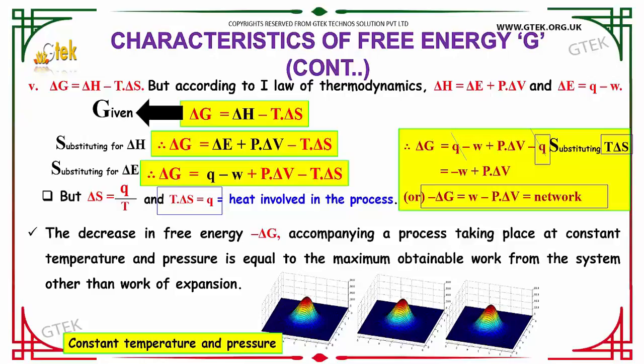T dot delta S is considered as the heat involved in the process. That's why I am substituting here. The decrease in free energy, minus delta G, accompanying a process taking place at constant temperature and pressure is equal to the maximum obtainable work from the system other than the work of expansion.